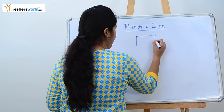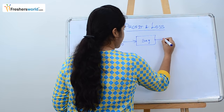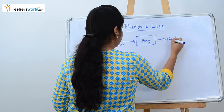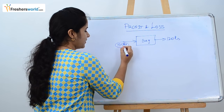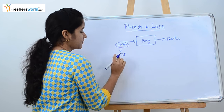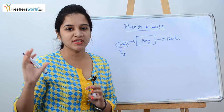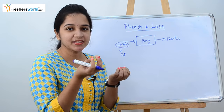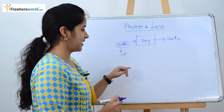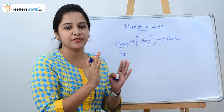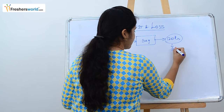Let's say you have a bag and you bought it for 100 rupees and then you are selling it for 120 rupees. The 100 rupees is what we call the cost price — you are paying this amount to get the bag from a wholesaler. The 120 rupees at which you are selling it to your friend is called the selling price.